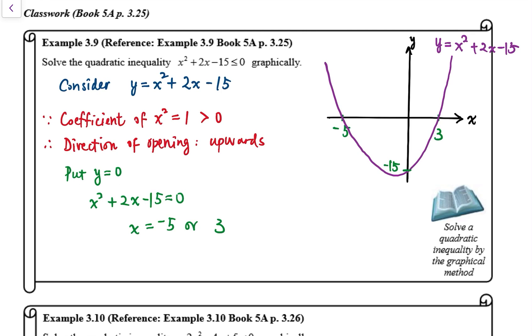By making use of the graph, we want to look at the range of values of x that y is less than or equal to 0. So we'll look at the part of the graph that's below the x-axis. And the values of x lie between 3 and negative 5.